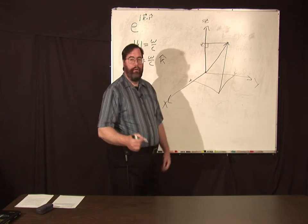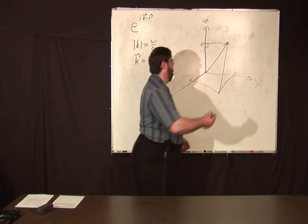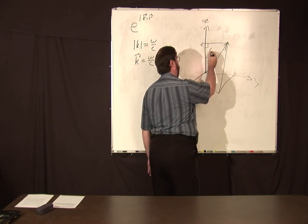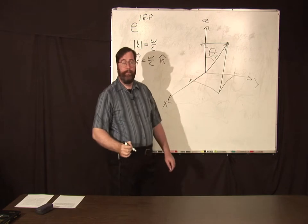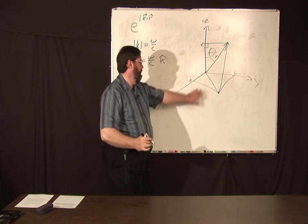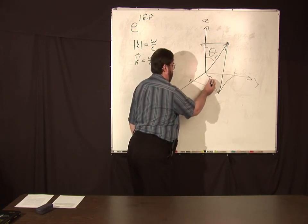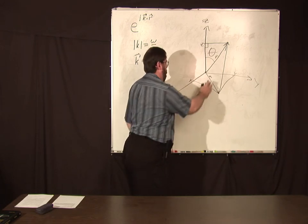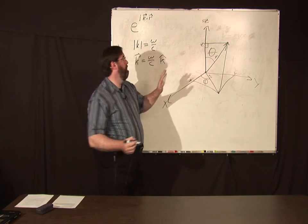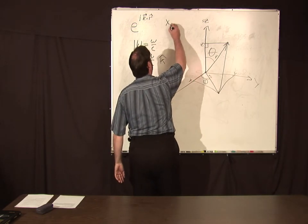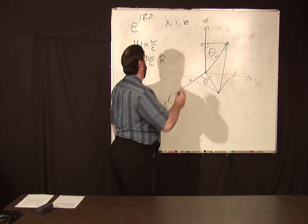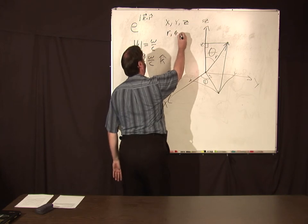There's also something called spherical coordinates that you can describe a vector by, where its length is r, and the angle between the z-axis and the vector is called theta, and the angle between the x-axis and the projection into the x-y plane of the vector is that angle here is called phi. So you've got two types of coordinates: Cartesian coordinates which are x, y, and z, and polar coordinates r, theta, and phi.